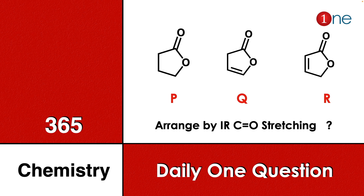Welcome to One Chemistry. This is the 365 Chemistry series — one question daily for you. Here, cyclic esters are given. P is a simple five-membered cyclic ester, and Q is a cyclic ester with a double bond.